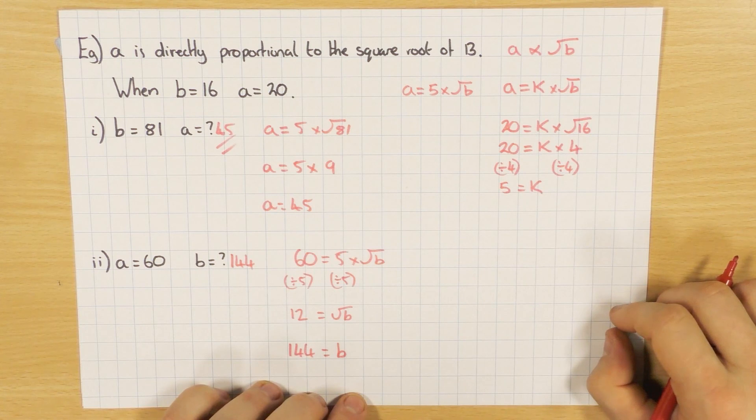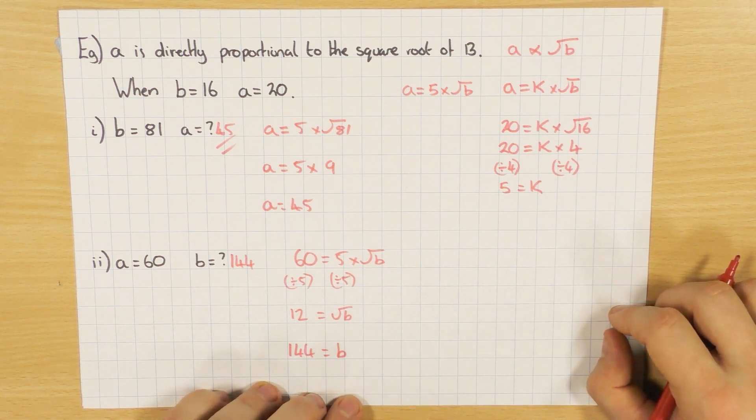Okay guys, so there's a couple of examples of just basic direct proportion. A few squares, a cube, and a square root. So hopefully that covers everything that you'll need to know with direct proportion. Cheers!